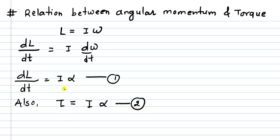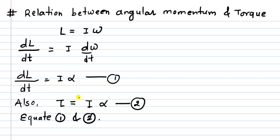Now if we equate equations 1 and 2, the right-hand sides of both equations are the same, so it implies that the left-hand sides should also be equal. Therefore, tau equals dL/dt. This is the relation between torque and angular momentum.